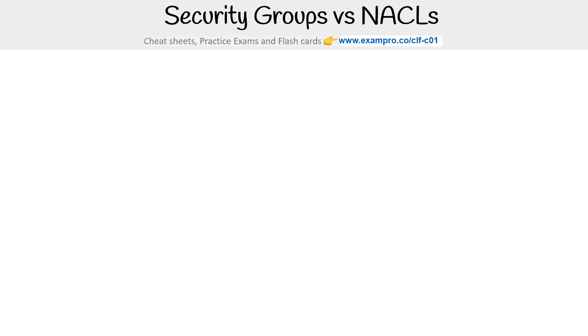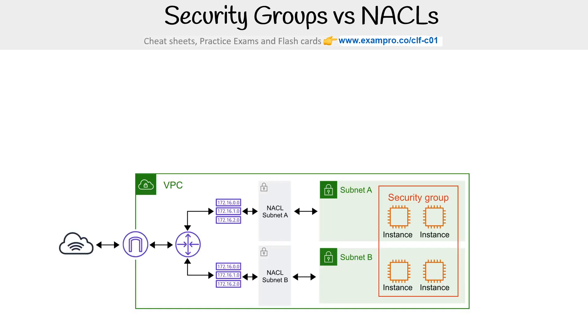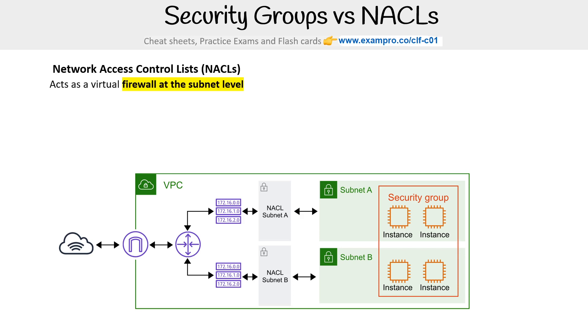Hey, it's Andrew Brown from ExamPro, and we are comparing security groups versus NACLs. I have this nice architectural diagram that has both NACLs and security groups in it, and we'll just kind of talk about these two. NACLs stand for network access control lists, and they act as a virtual firewall at the subnet level.